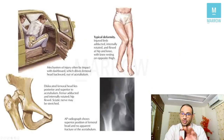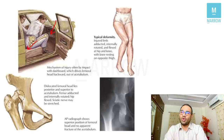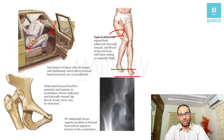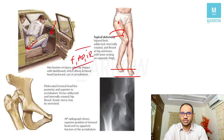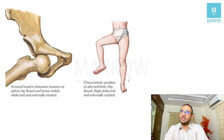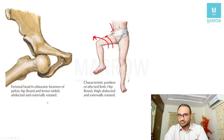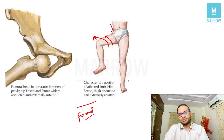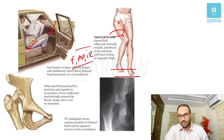Let's review hip dislocations. Dashboard injury gives posterior dislocation of hip. The attitude of the limb in posterior dislocation is flexion, adduction, and internal rotation with limb shortening (FADAIR). The most commonly injured nerve in posterior dislocation of hip is the sciatic nerve. In anterior dislocation, the hip is flexed, abducted, and externally rotated with limb lengthening. The nerve injured in anterior dislocation is the femoral nerve. Posterior dislocation is the most common type.